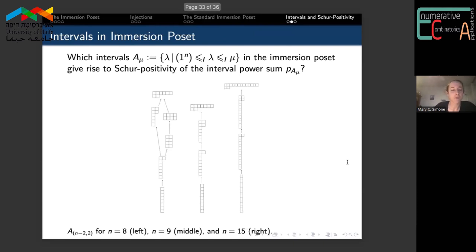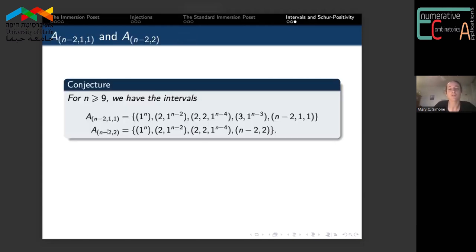In particular, we focused on just two shapes, one of which being n minus two, two. We noticed that this interval seems to stabilize when n is greater than or equal to nine to these four shapes that we have. In addition to this interval n minus two, two, we also looked at the interval n minus two, one, one.